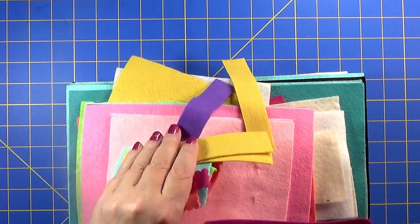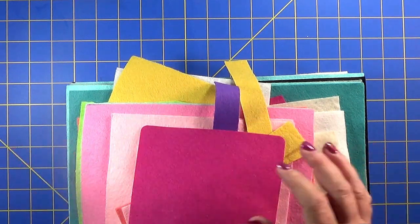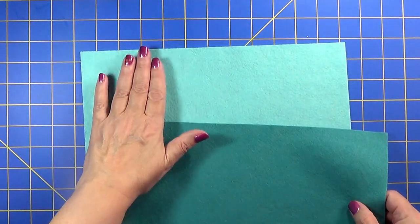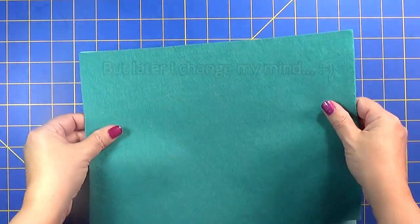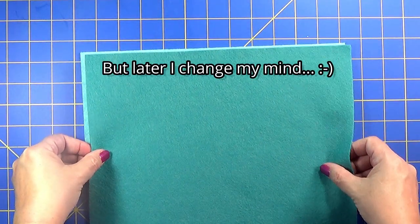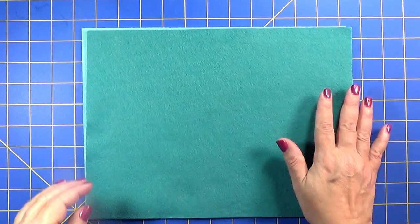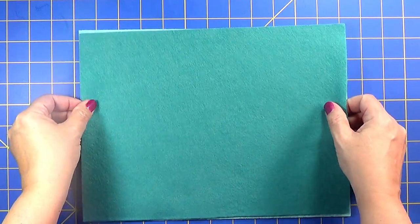I decided to go with a beautiful blue and aqua theme. So my outside is going to be this light blue, my inside is going to be this, and I'm still trying to decide what color I'm going to make the pages on the inside.